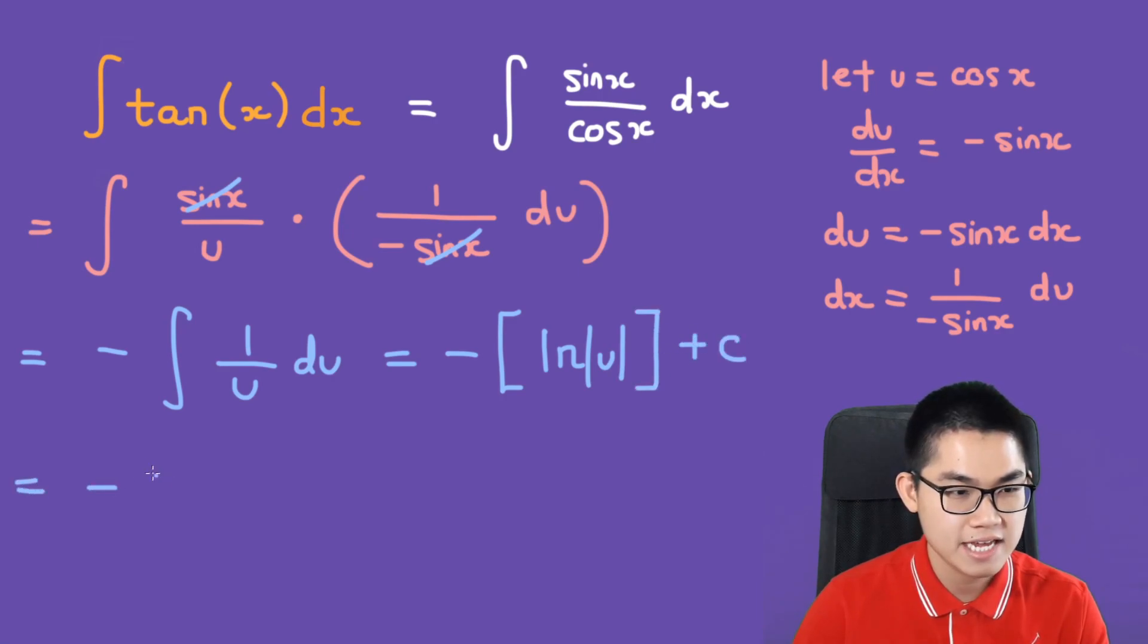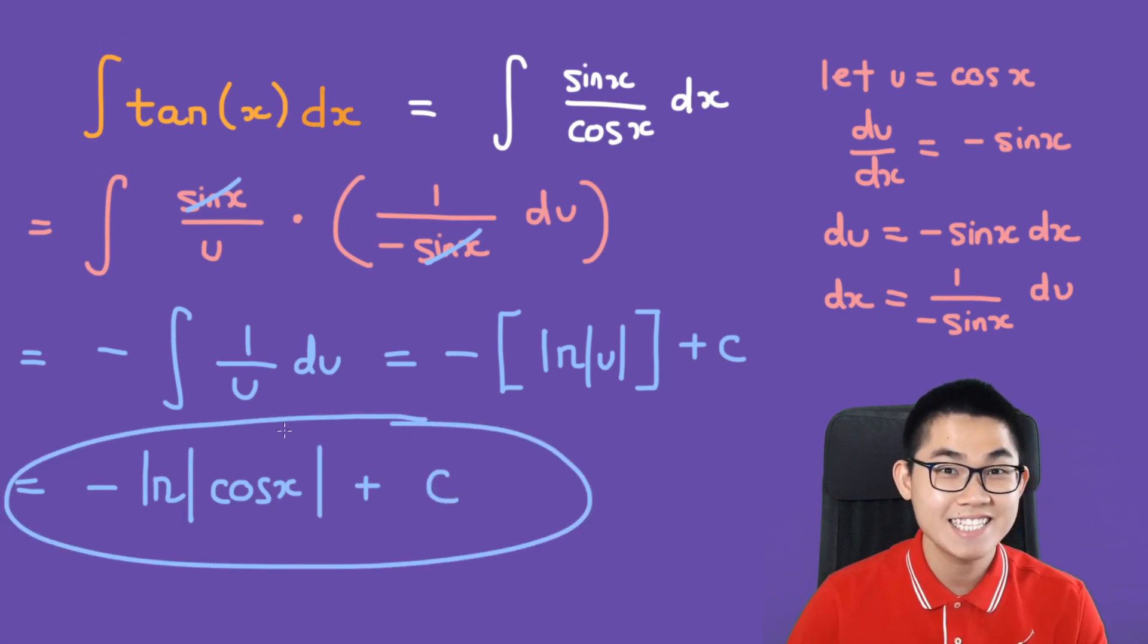And this will give us negative ln of the absolute value of u, which we will change back to cosine of x. So negative ln of absolute value of cosine of x plus c. And that's your answer.